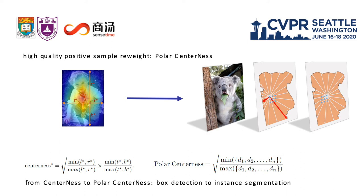Centerness is introduced to suppress low-quality samples. However, directly transferring it to our system can be suboptimal, since centerness is designed for bounding boxes and we care about mask prediction. So we designed the polar centerness to weight different positive samples. The formula can be seen in this slide.